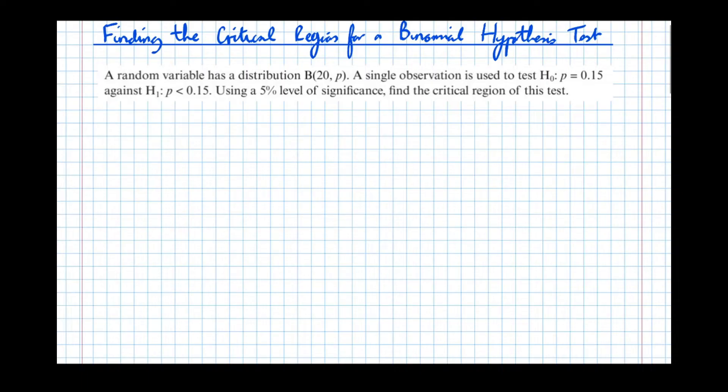So as we did before, let's draw the sliding scale of probabilities. And we can see here that we're testing a less than. So the bottom 5% of probabilities is going to be rejected.